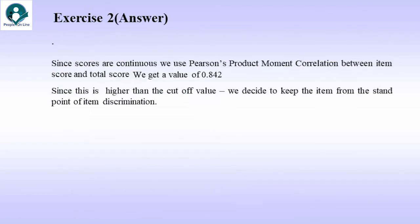Since scores are continuous, we use Pearson's product moment correlation. Between item score and total score, we get a value of 0.842. Since this is higher than the cutoff value, we decide to keep the item from the point of view of item discrimination. I would say sufficient item discrimination.